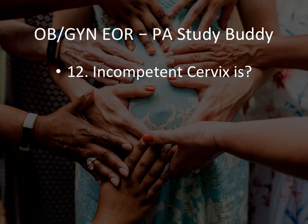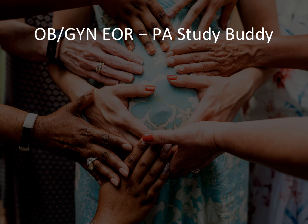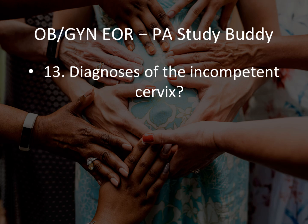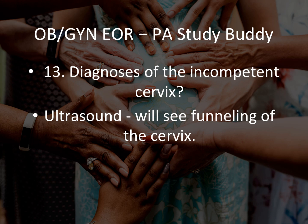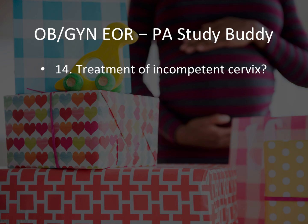Question 12: Incompetent cervix — what is it? That is reported recurrent second-trimester miscarriage. With a lot of second-trimester miscarriages the diagnosis is incompetent cervix. Question 13: Diagnosis of incompetent cervix — we need an ultrasound, and it will show funneling of the cervix. If a patient's ultrasound shows funneling of the cervix, think incompetent cervix — the most common cause of second-trimester miscarriages.